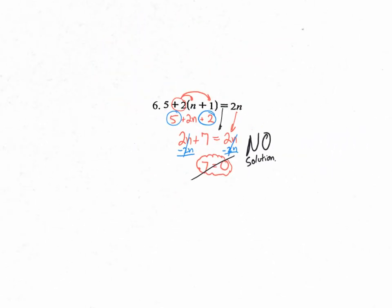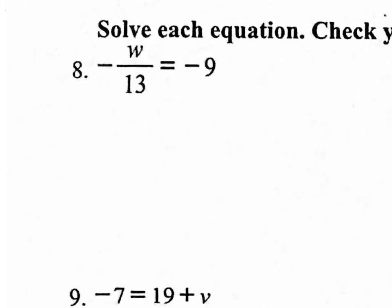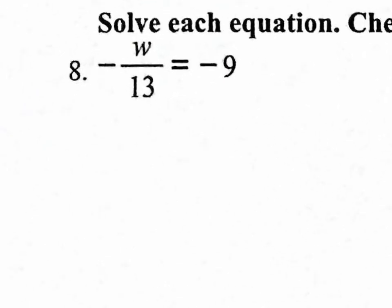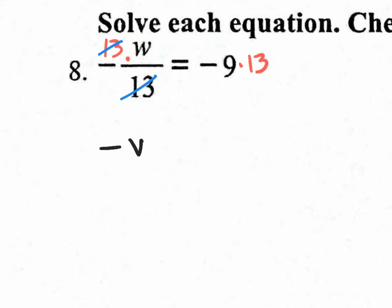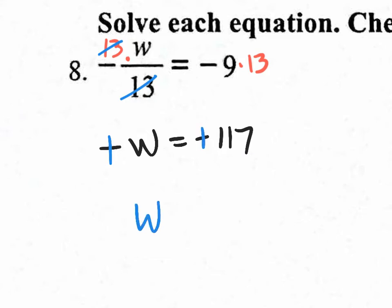Let's move on to number 8. Really simple — we have a fraction. This says W divided by 13. If I didn't want this divided by 13, I'd multiply by 13. So let's put times 13 right here. The 13 and the 13 cancel, but what I do to one side I must do to the other. What we have left is negative W equals 9 times 13, which is 117. Then divide by negative 1 — or just change the sign on both sides — and the answer is W equals 117.